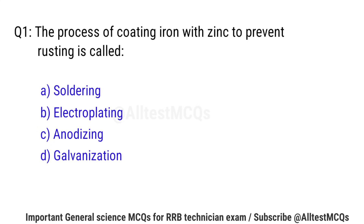Question No. 1: The process of coating iron with zinc to prevent rusting is called? Right option is D: Galvanization.